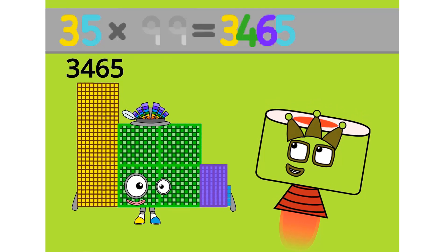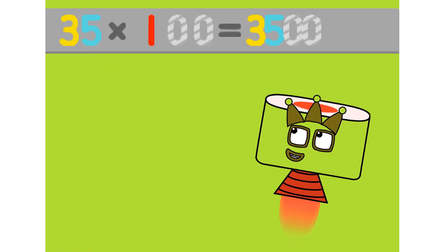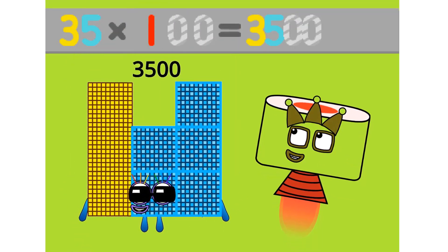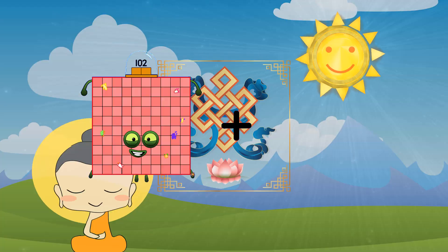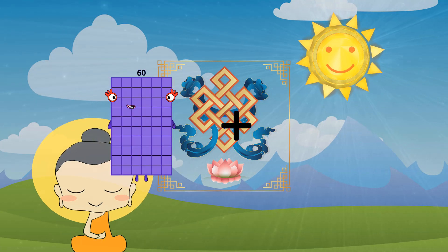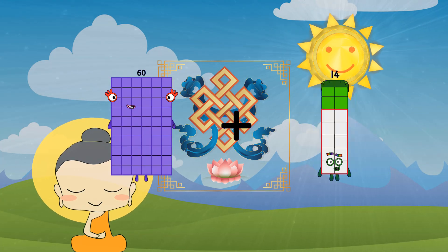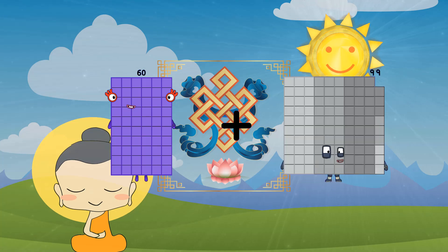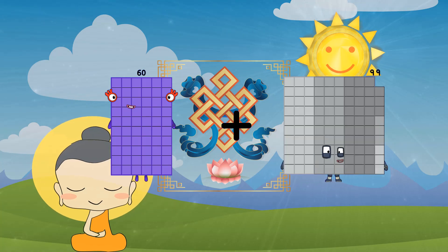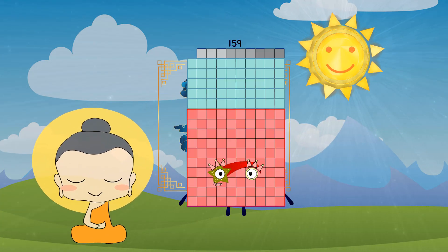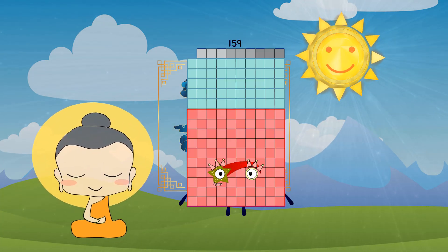35 times 100 equals 3500. 50 plus 99 equals 159.